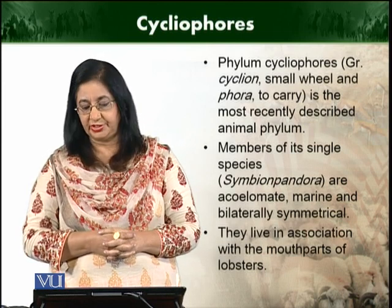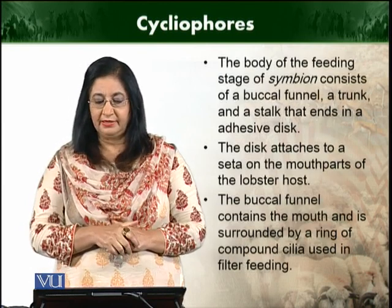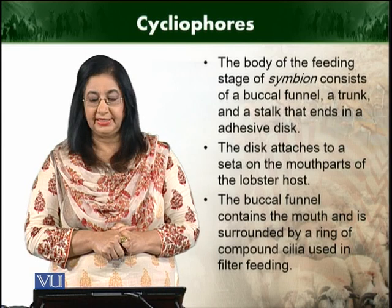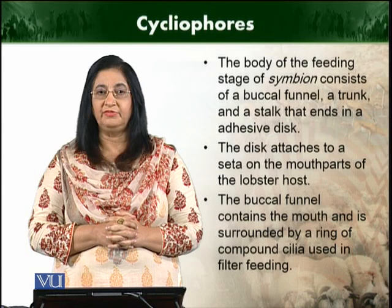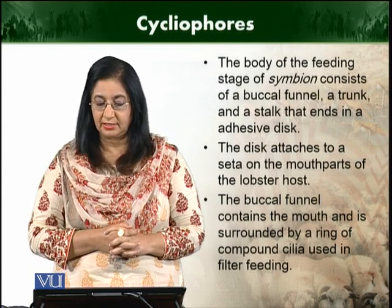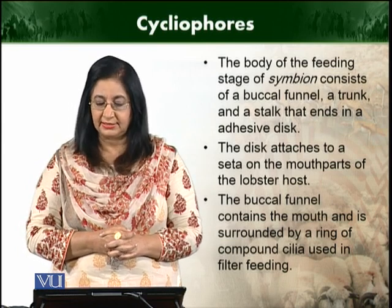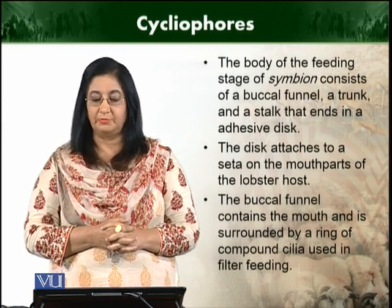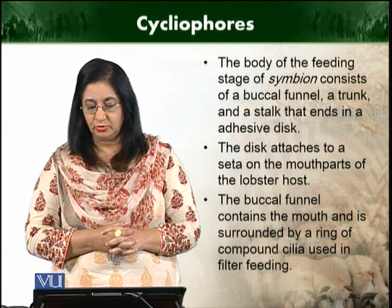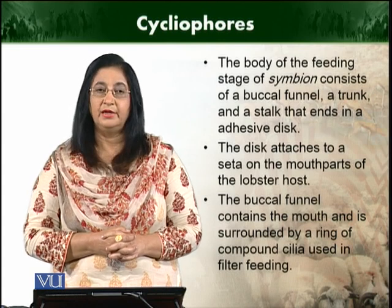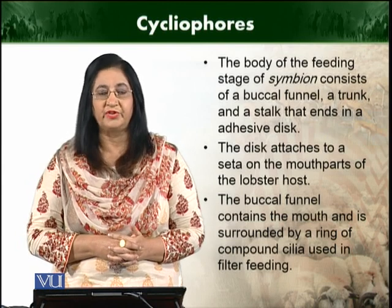They live in association with the mouthparts of lobsters. The body of the feeding stage of Symbion consists of a funnel known as the buccal funnel, a trunk, and a stalk that ends in an adhesive disc. This attaches to the setae on the mouthparts of the lobster host. The buccal funnel contains the mouth and is surrounded by a ring of compound cilia, which are used for filter feeding.